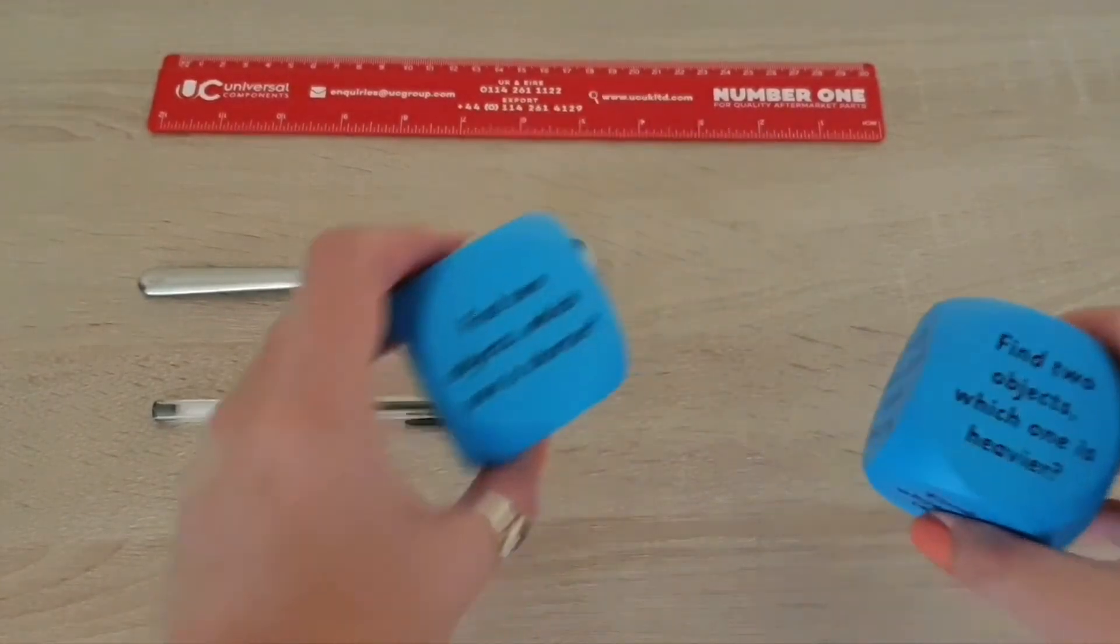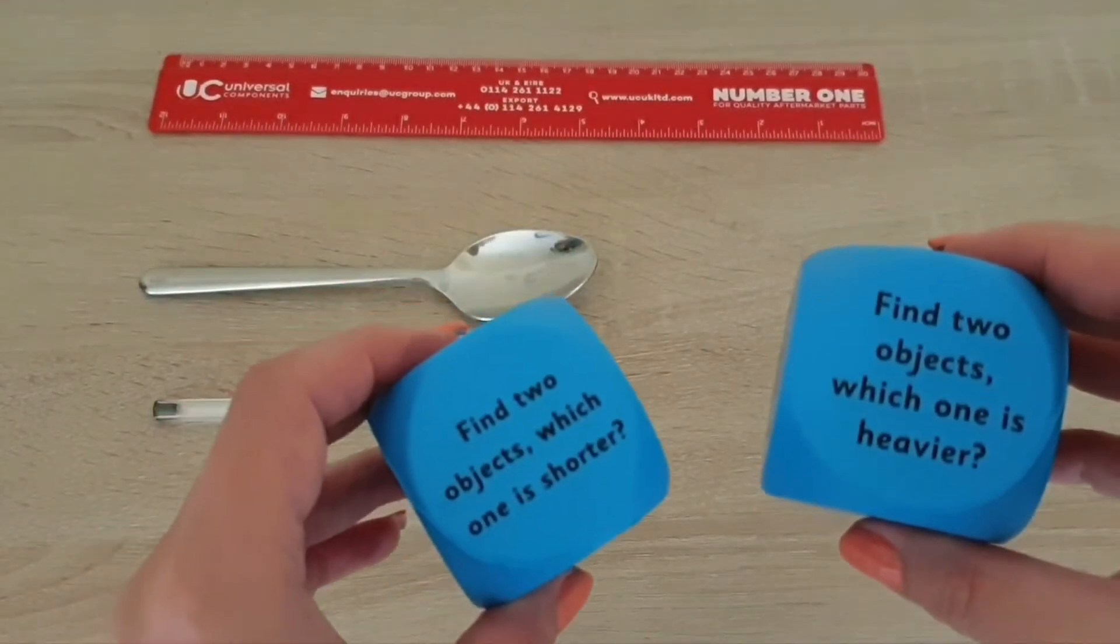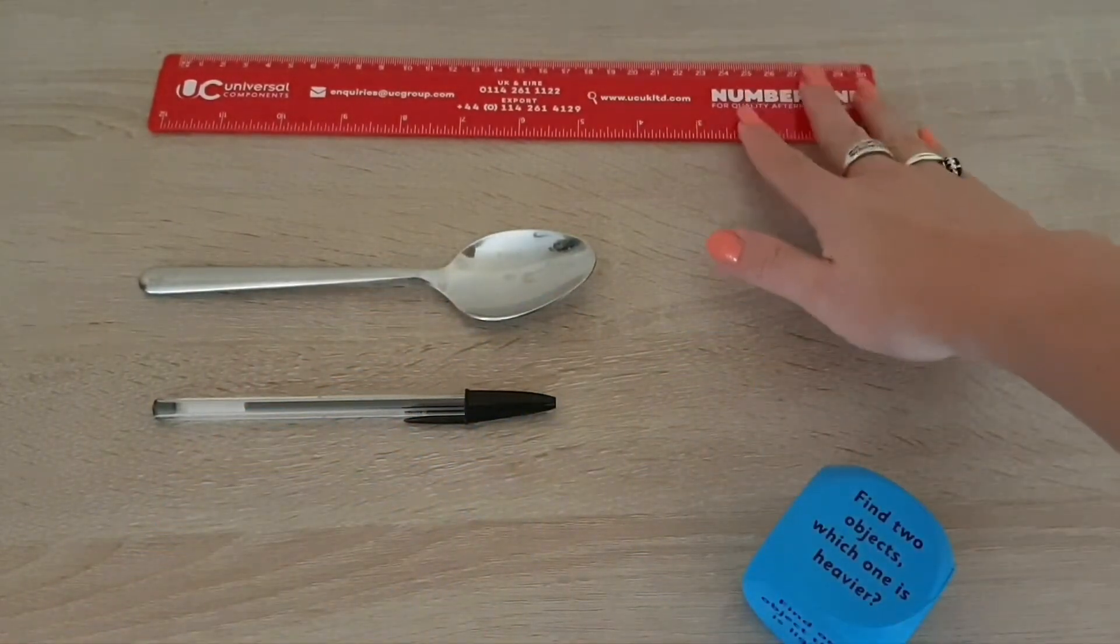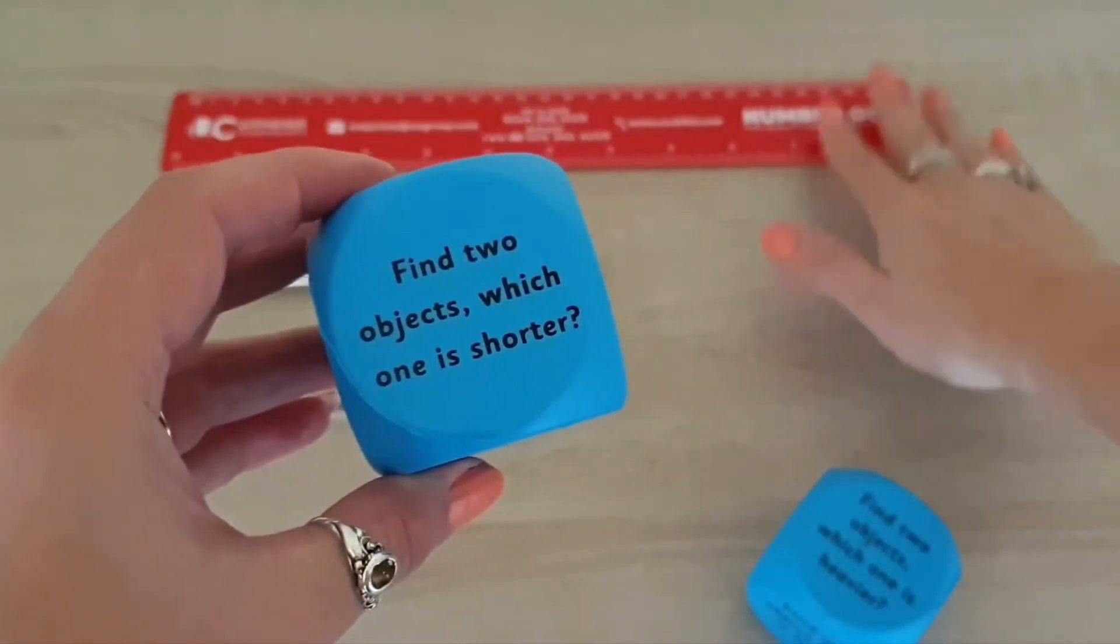These length and weight cubes are also great for helping children develop their ability to read measurements as well. I'm just going to have a little look at how we can use the length cube to help them read rulers.